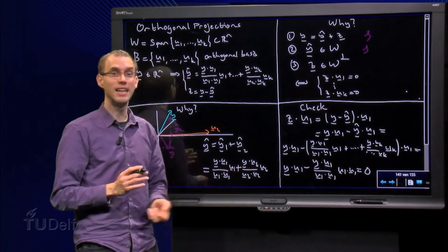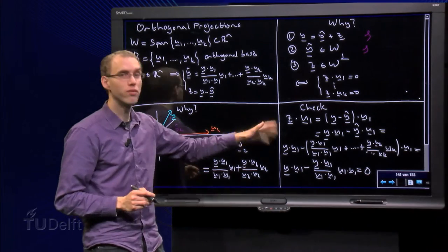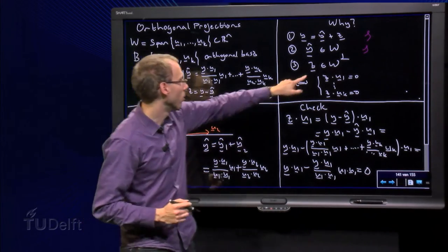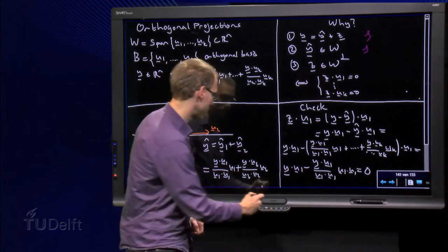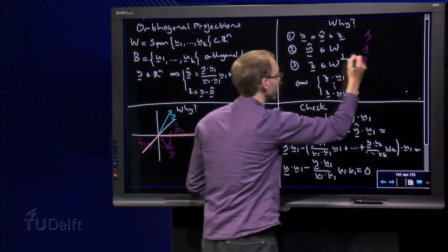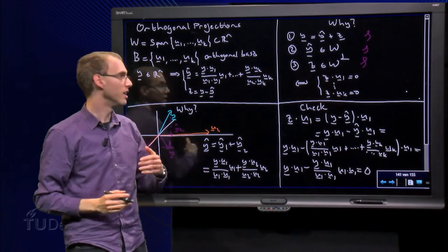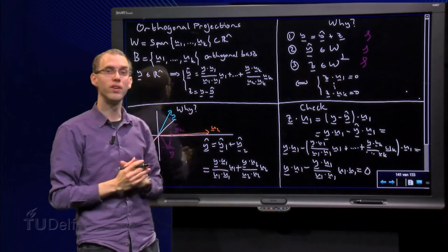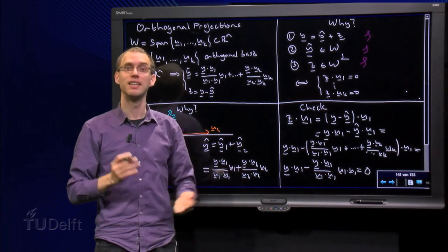So indeed, z is orthogonal to u1. You can of course do the same for all the other ones, for u2 up to uk. So all those over here are satisfied, which means that z is in w-perp, and we see that all three conditions are satisfied, so now we know how to compute y-hat and z.